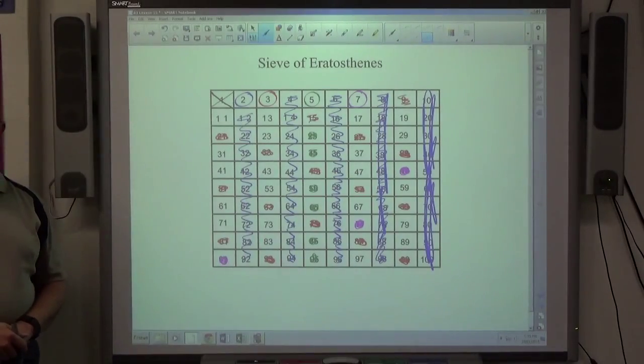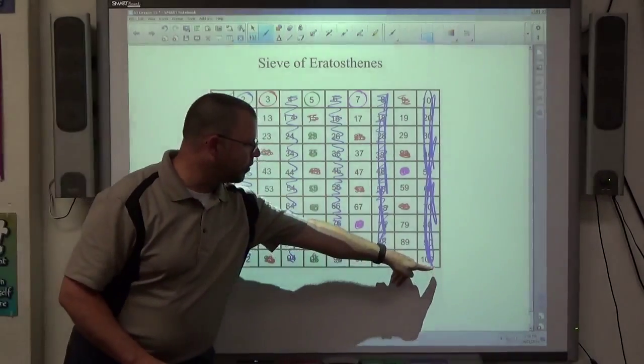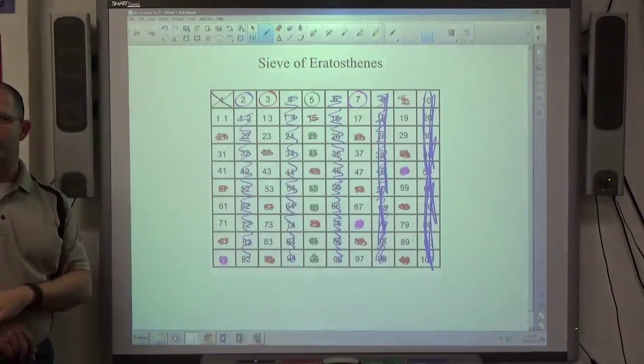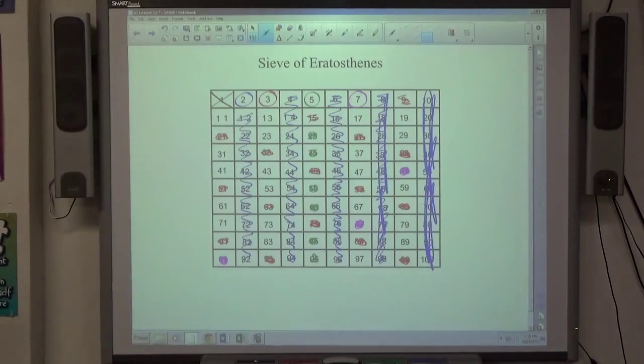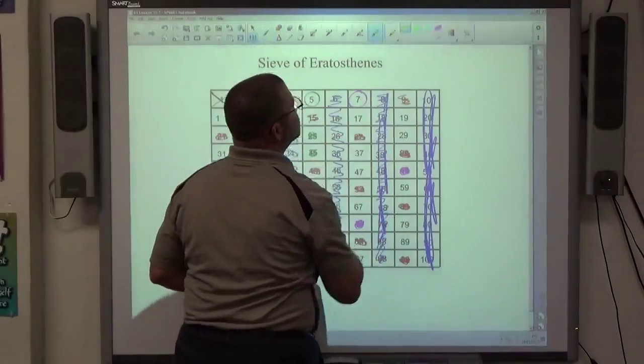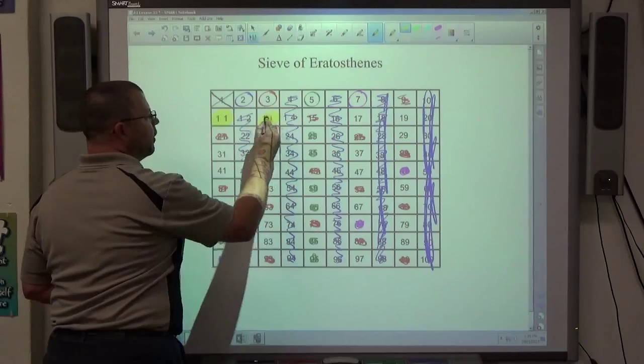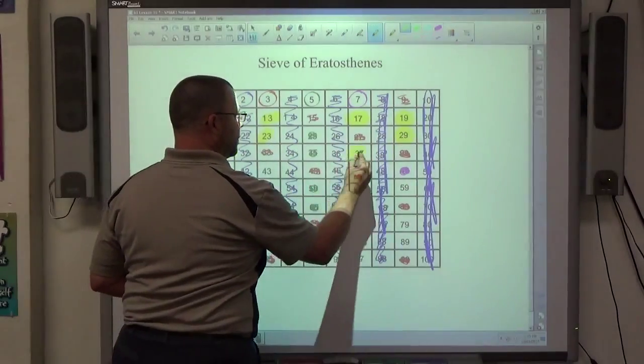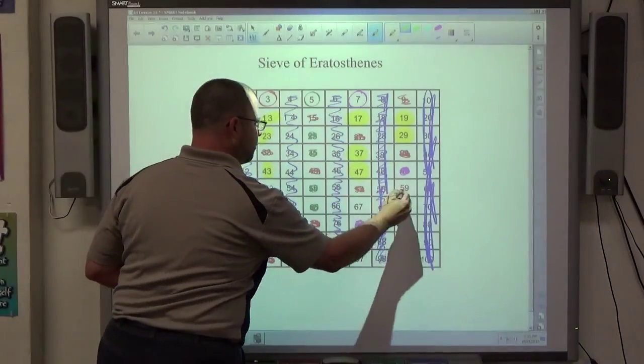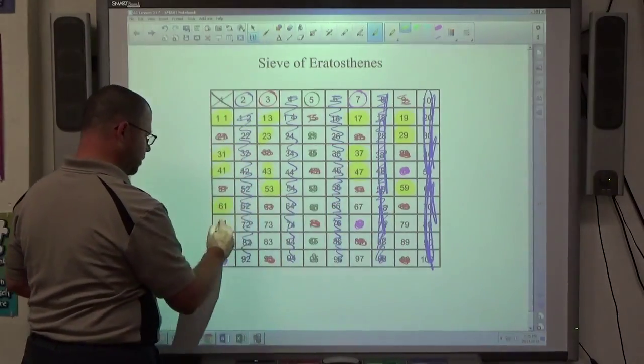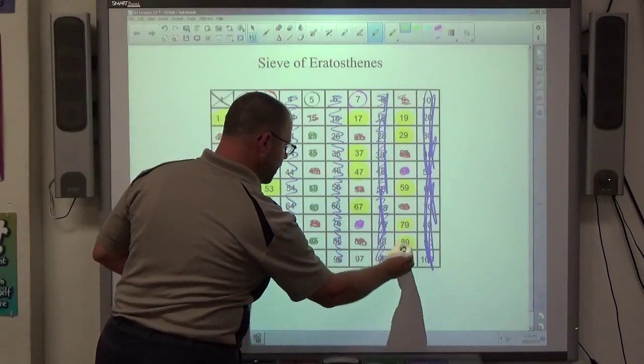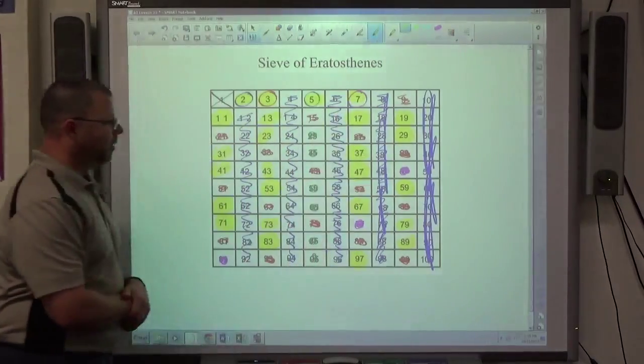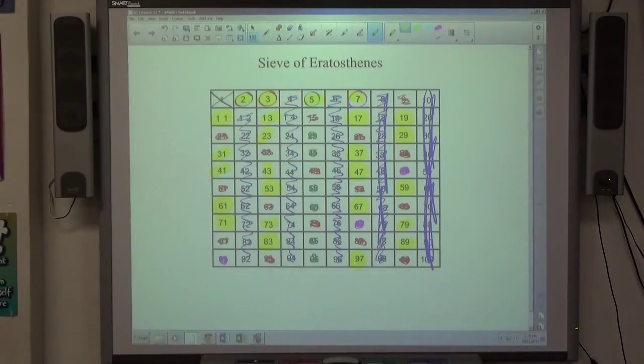What's the square root of 100? 10. 10 is the square root of 100. So that means once I get to 10, which is the square root of 100, I found all of them. Anything that's not marked out at this point is a prime number. So at this point, 11, 13, 17, 19, 29, 23, 31, 37, 41, 43, 47, 59, 53, 61, 71, 73, 67, 79, 89, 97, 83, and of course the 4 we already found. Everything highlighted in yellow is a prime number.